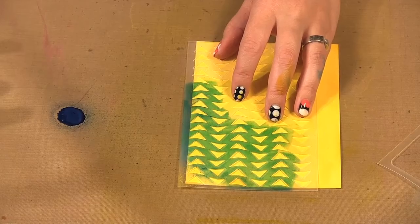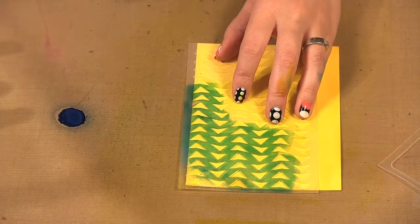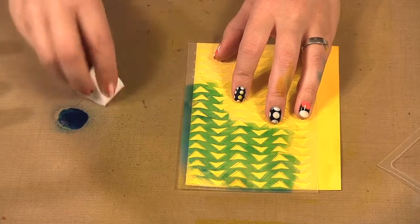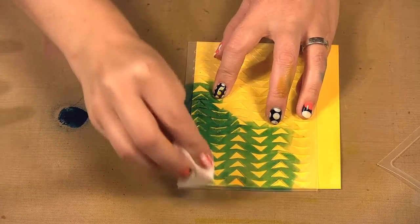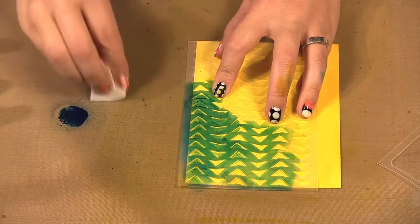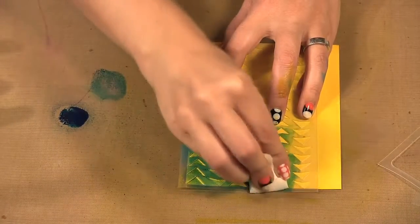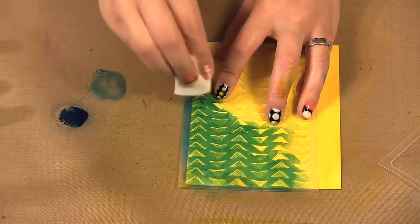And then I will get another little makeup sponge and then just apply it like this. Because I just find if you were to spray it right on it's really pigmented.